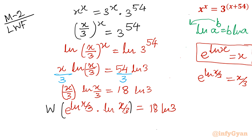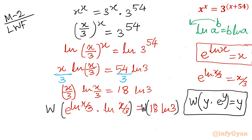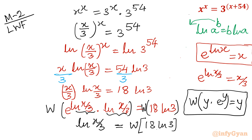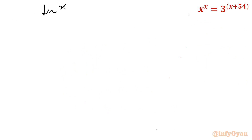In the Lambert W form, if we have y · e^y and apply W, we get y back due to the inverse function nature. So the left-hand side gives ln(x/3). The right-hand side is W(18·ln3). Thus ln(x/3) = W(18·ln3).